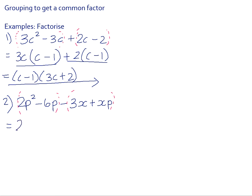So 2P squared minus 6P, 2P is common. That leaves you with P minus 3. And in the second lot of the terms, the X is common. So negative X is common. And that will leave you with 3. And remember, you've taken out a negative, which changes that sign to a negative.